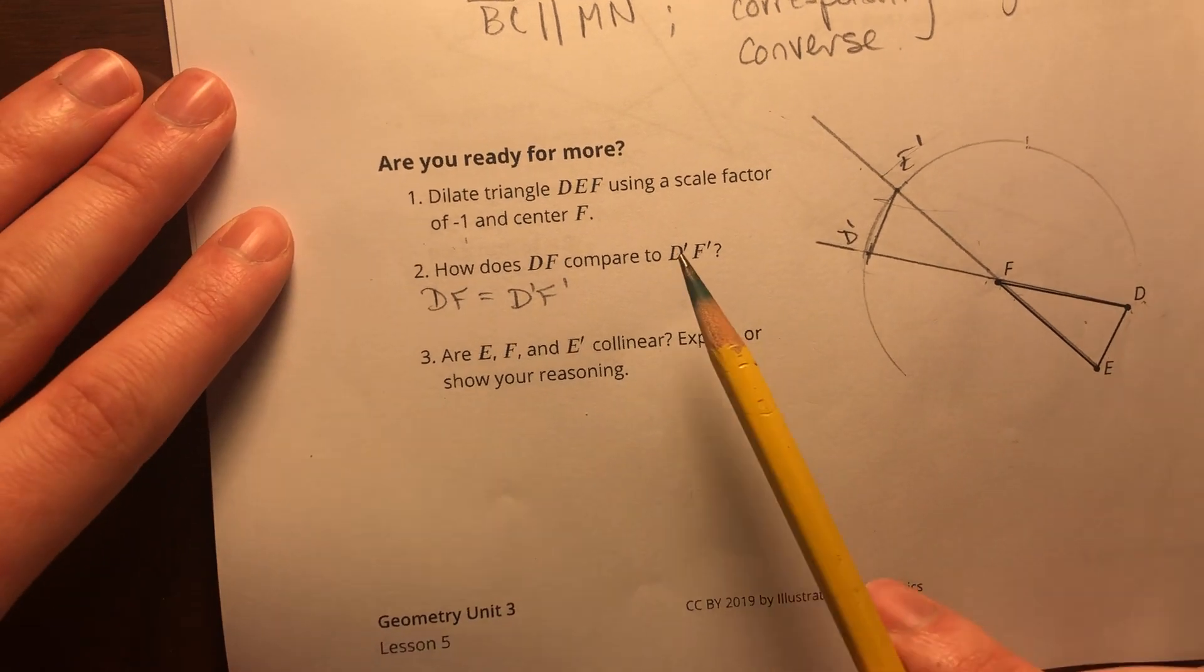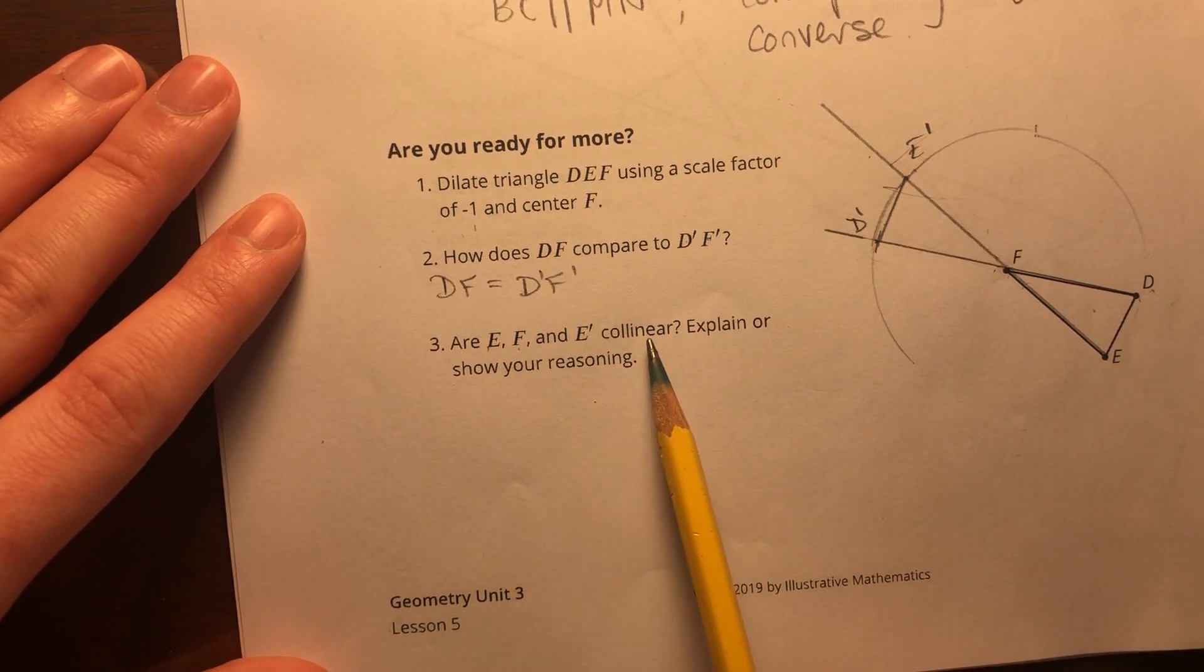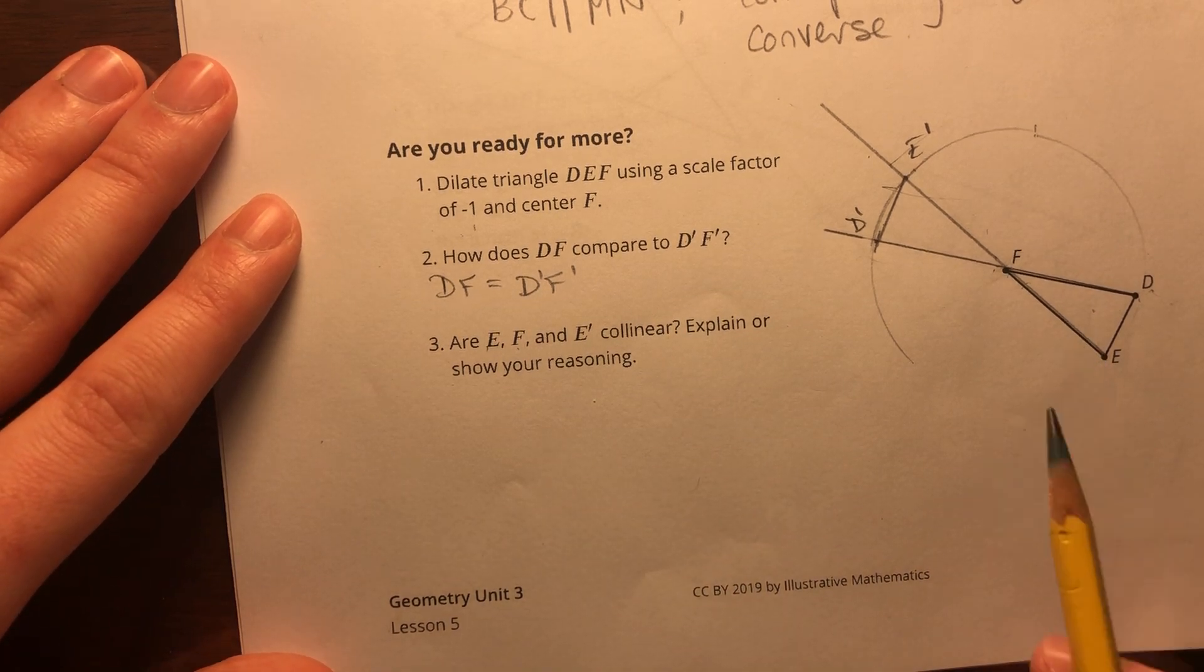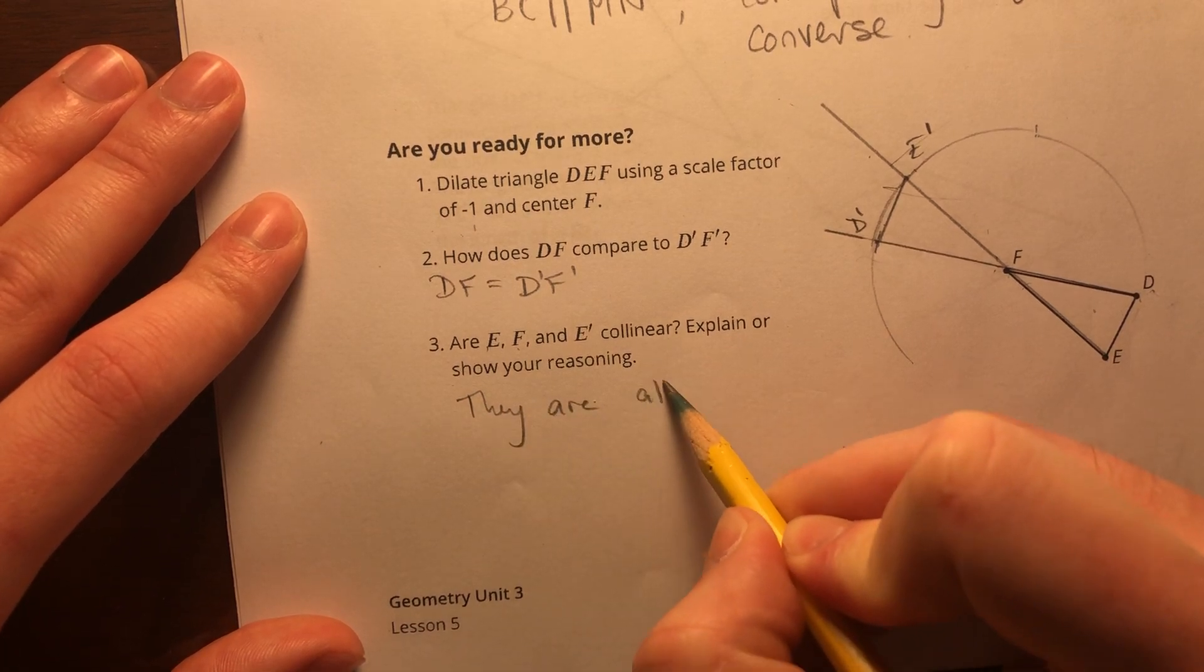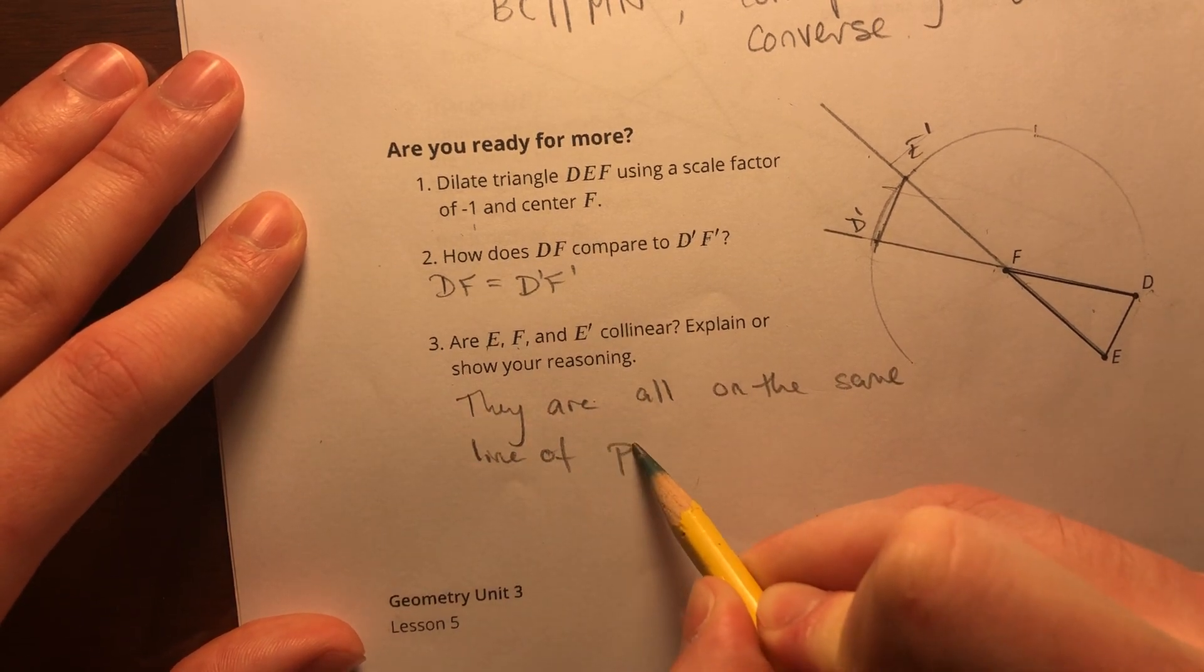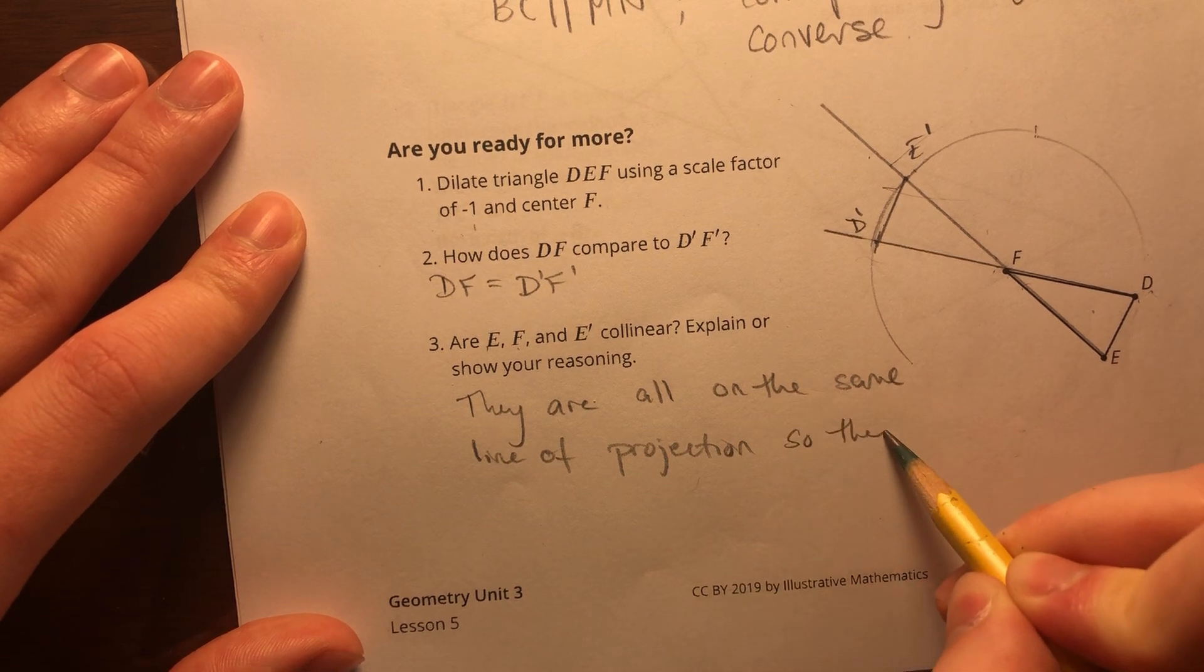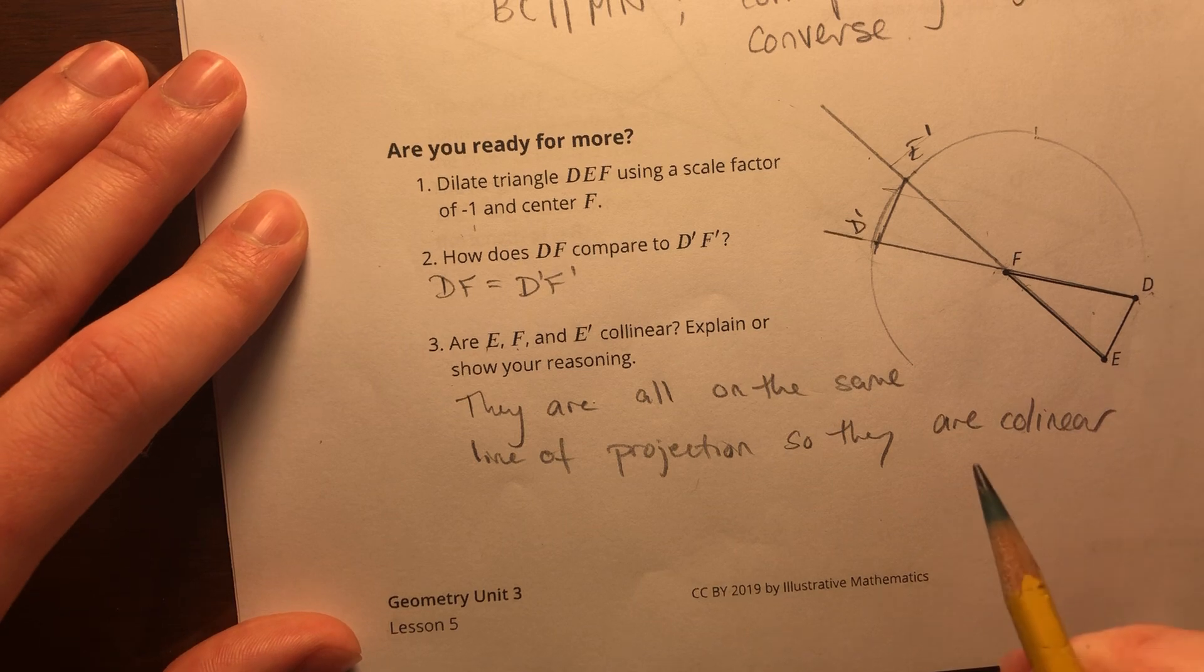So that's what they're trying to say here. Are E, F, and E prime collinear? Explain or show your reasoning. Well, yeah, they are collinear. Because they are all on the same line of projection. So they are collinear. Alright.